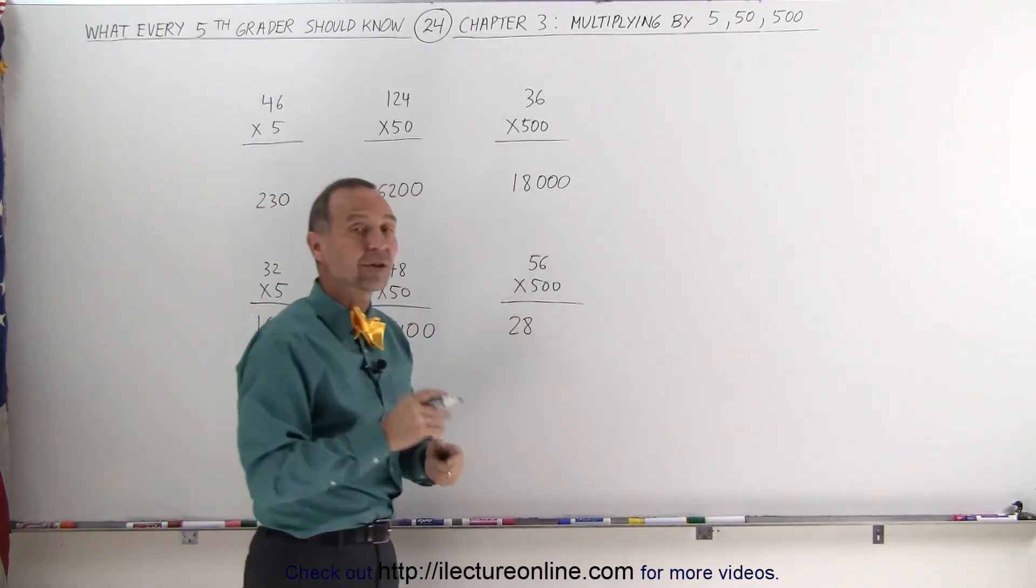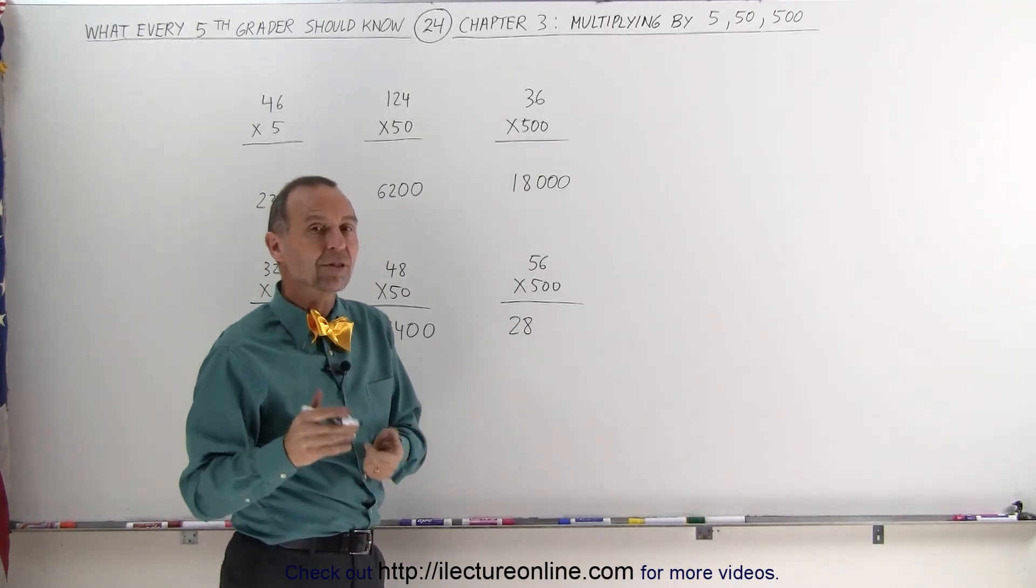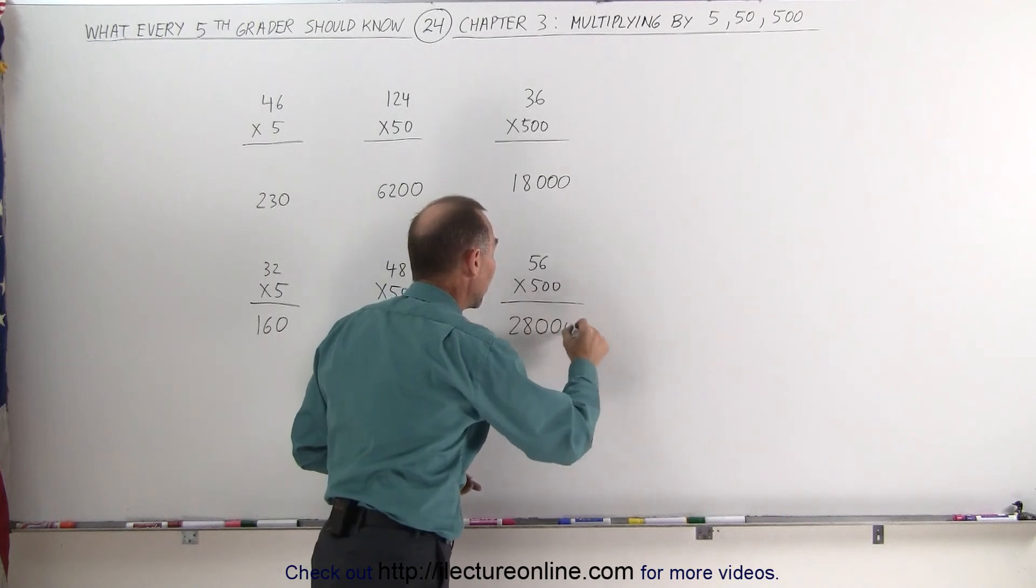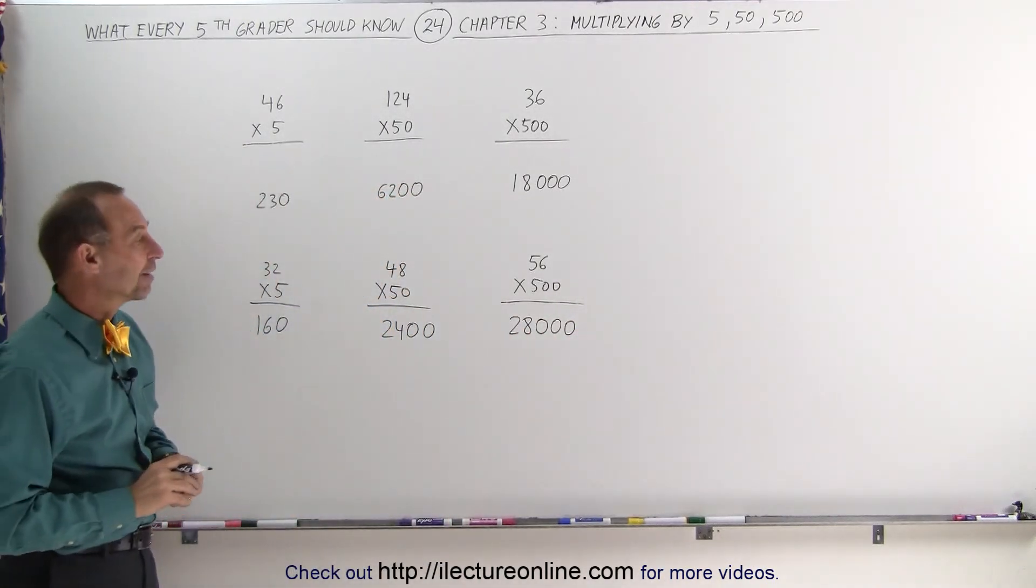Then I multiply times 1,000 instead of times 500, twice 500. Multiplying times 1,000 is like adding three zeros. Notice how quickly we can take 56 and multiply it times 500.